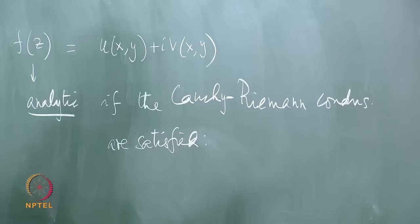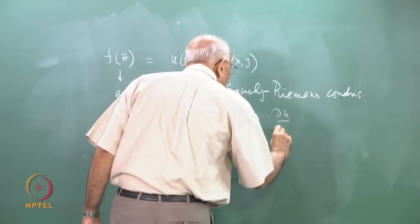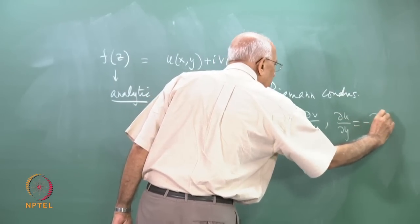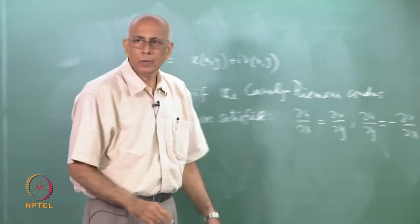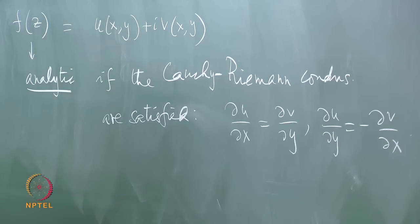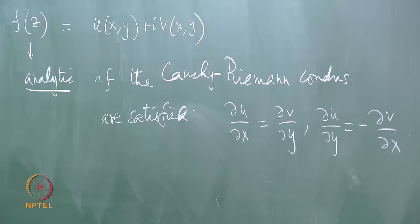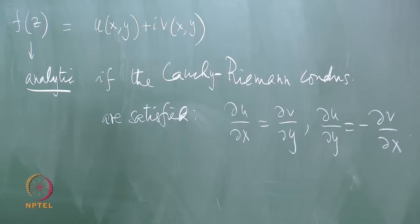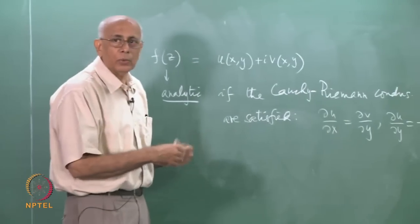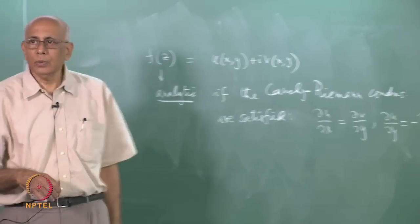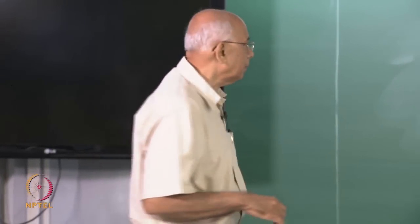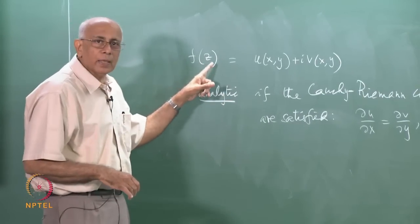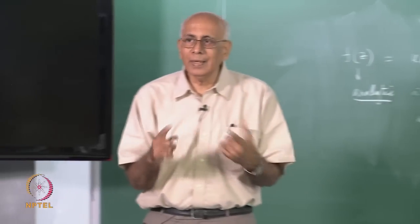The Cauchy-Riemann conditions are: ∂u/∂x = ∂v/∂y and ∂u/∂y = −∂v/∂x. An analytic function must have continuous first-order partial derivatives with respect to both x and y for both the real and imaginary parts. That is a prerequisite — you need those partial derivatives to exist and be continuous.